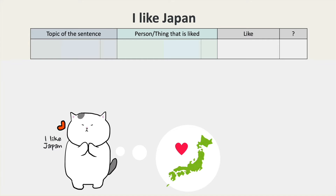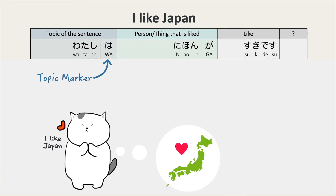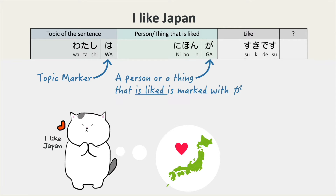I like Japan. Watashi wa Nihon ga suki desu. As we've seen, wa marks the topic of the sentence. Ga has many functions, but one of the functions we learned in Japanese 101 is to mark a person or thing that is liked.